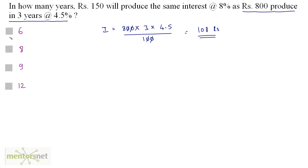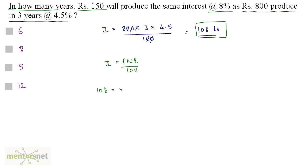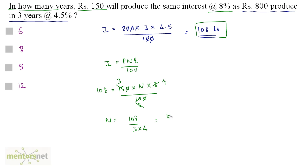Now we need to find how many years Rs. 150 will produce the same interest of Rs. 108 at 8 percent. Using SI equals PNR upon 100: 108 equals 150 times N times 8 upon 100. The zero cancels out, so N equals 108 divided by 3 times 4, which is 108 divided by 12, and that equals 9. So 9 years is the answer, option C.